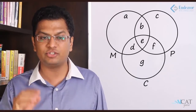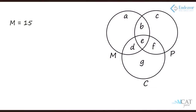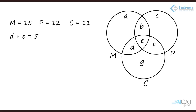Going back to the question: M = 15, P = 12, C = 11. Maths and chemistry (d + e) = 5. Maths and physics (b + e) = 9. Physics and chemistry (e + f) = 4. All three subjects means e = 3. By substituting e = 3 into each equation, we can find d, b, and f individually. Using these equations we can clearly find all the different values and hence solve for all required answers.